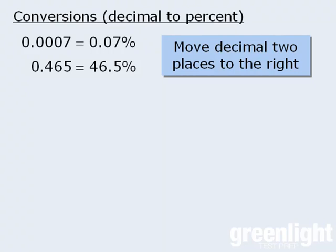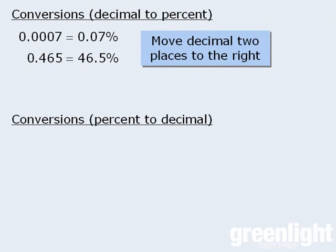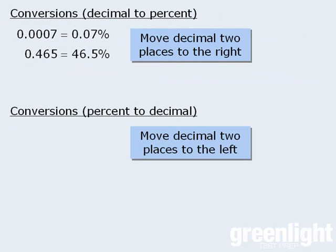When converting a percent to a decimal, the rule is to move the decimal point two spaces to the left. So to convert 9.63% to a decimal, we move the decimal point two spaces to the left to get 0.0963. Applying the same rule, 125% converts to the decimal 1.25.